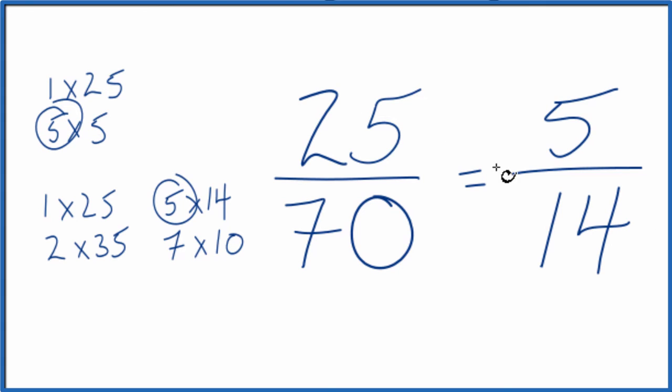And we've simplified 25/70 down to 5/14. We can't simplify this any further. These are equivalent fractions. 5 divided by 14, 25 divided by 70, you'll get the same number. It's just that we've simplified or reduced 25 over 70 down to 5 over 14.